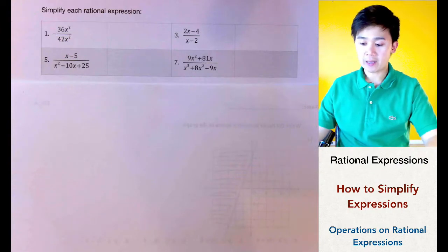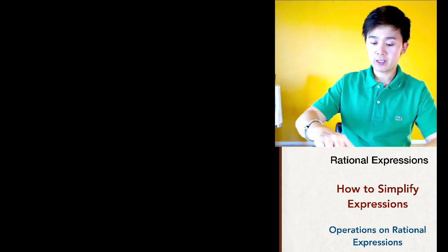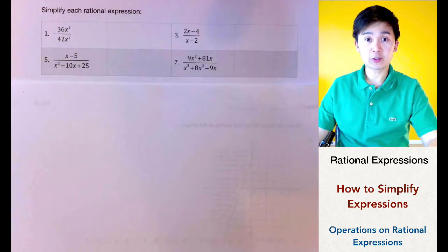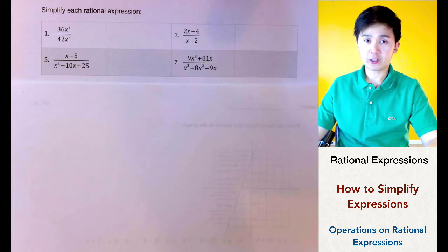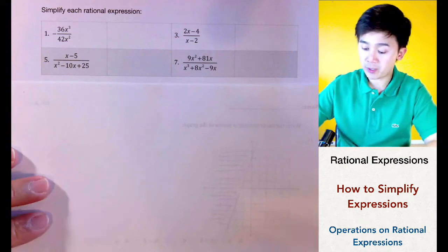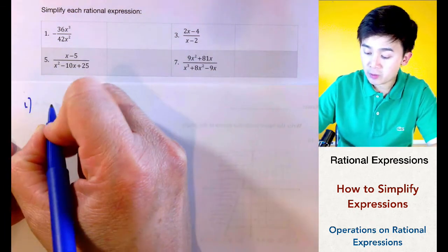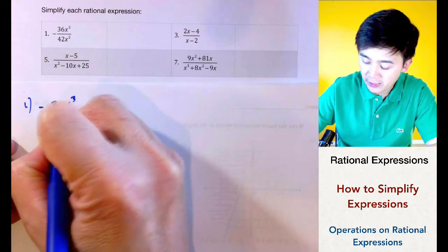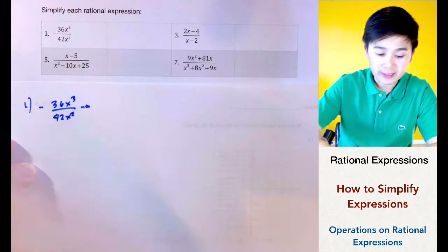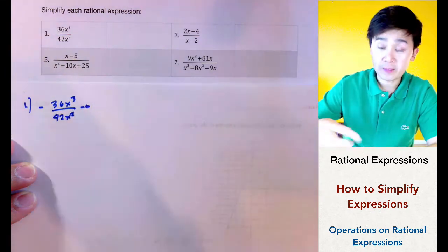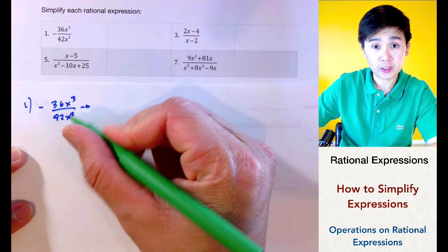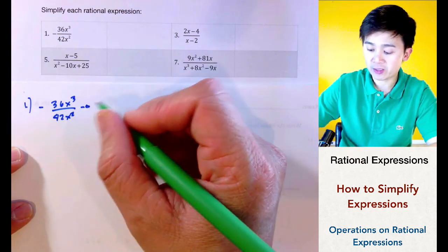Now we're going to be working on simplifying rational expressions. You should already know how to factor polynomials using the different factoring techniques from algebra. The idea of simplifying rational expressions is factoring your numerator and your denominator so you can cancel out the common term.